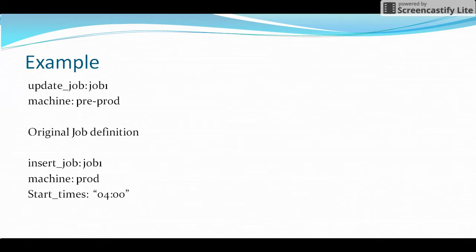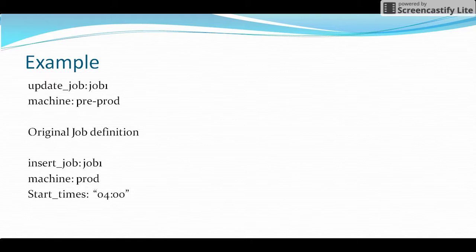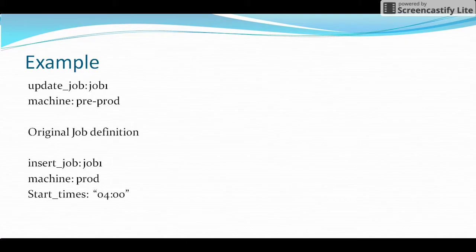With the update_job attribute, we can update an existing job or box. However, if we are updating multiple attributes — such as machine, start_time, calendar attributes, run window attributes, or command attribute — then it is better to delete the particular job and recreate it newly. Hope this video is helpful for you friends. Thanks for watching.